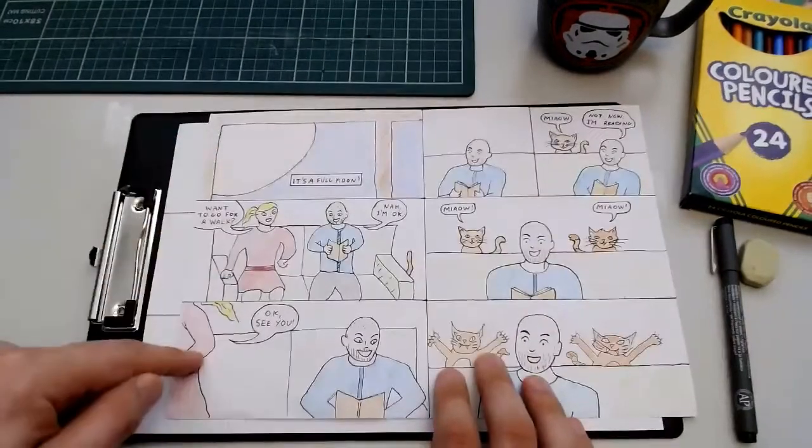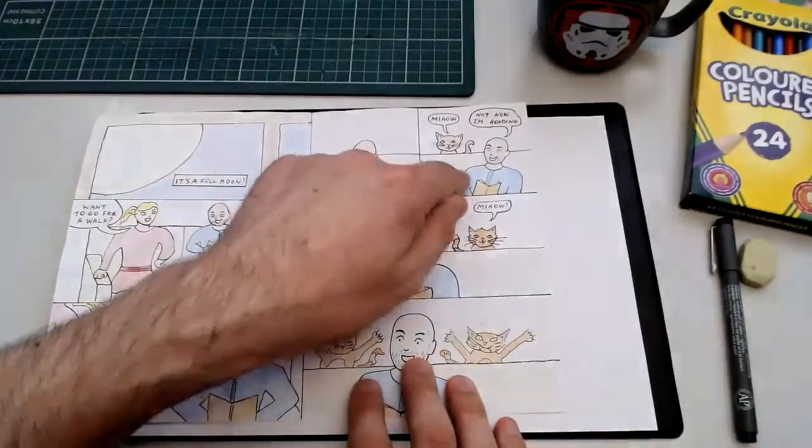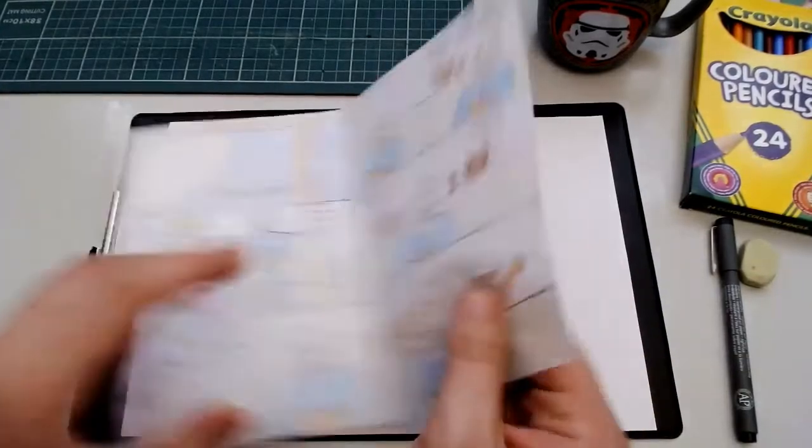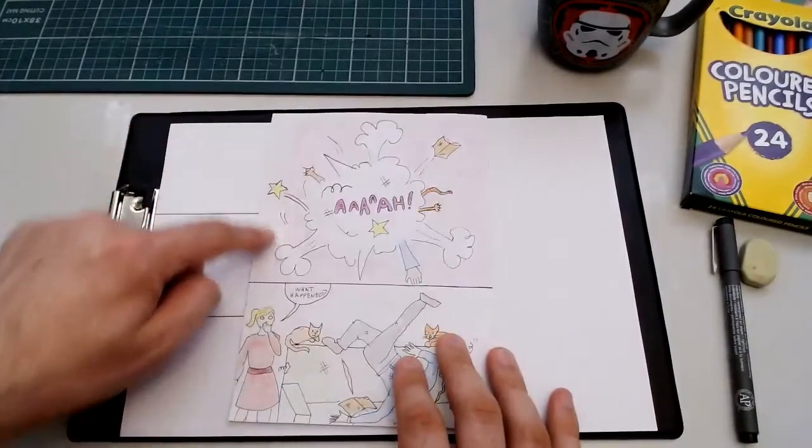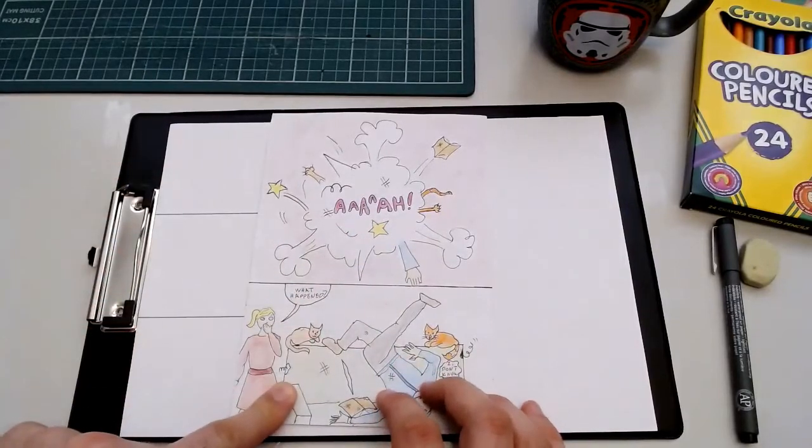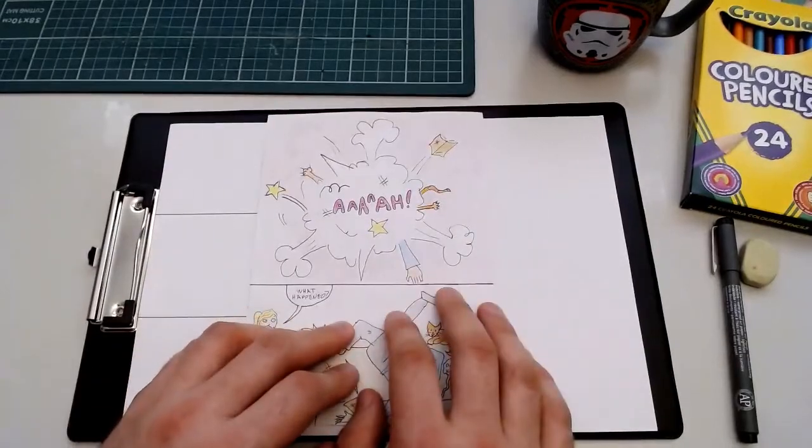So one important thing about your panels is that you don't want them all to be the same size and shape across your pages. So I have done three panels the same size in my first page. But then on my second page, I've done a couple of small panels, two even panels. And then on my final page, I've done one really big panel here where all the action happens and a smaller panel underneath it. It helps keep your comic more interesting if you have different sizes and shapes of panels.